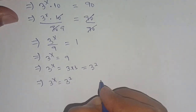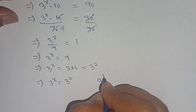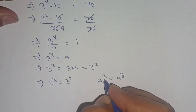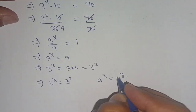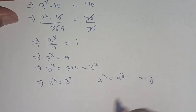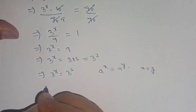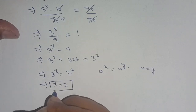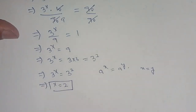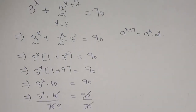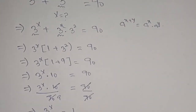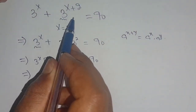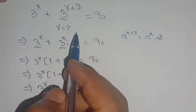This implies 3 raised to power x is equal to 3 raised to power 2. It is in the form of a raised to power x is equal to a raised to power y, so we can compare and get x is equal to y. From this we get x is equal to 2, which is the required value of x that satisfies our given exponential equation 3 raised to power x plus 3 raised to power x plus 2 is equal to 90.